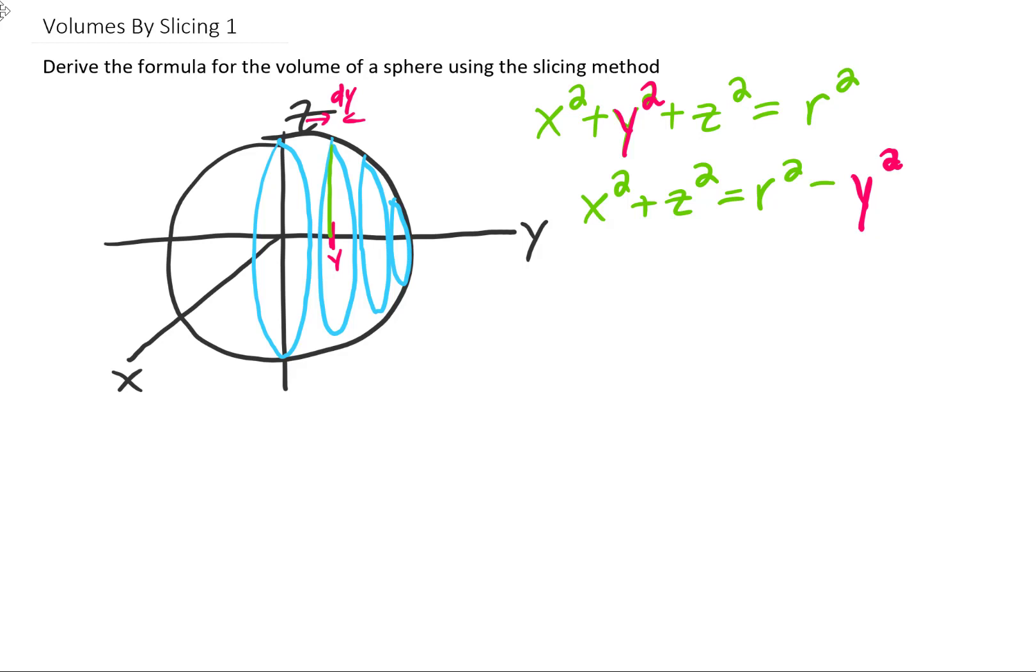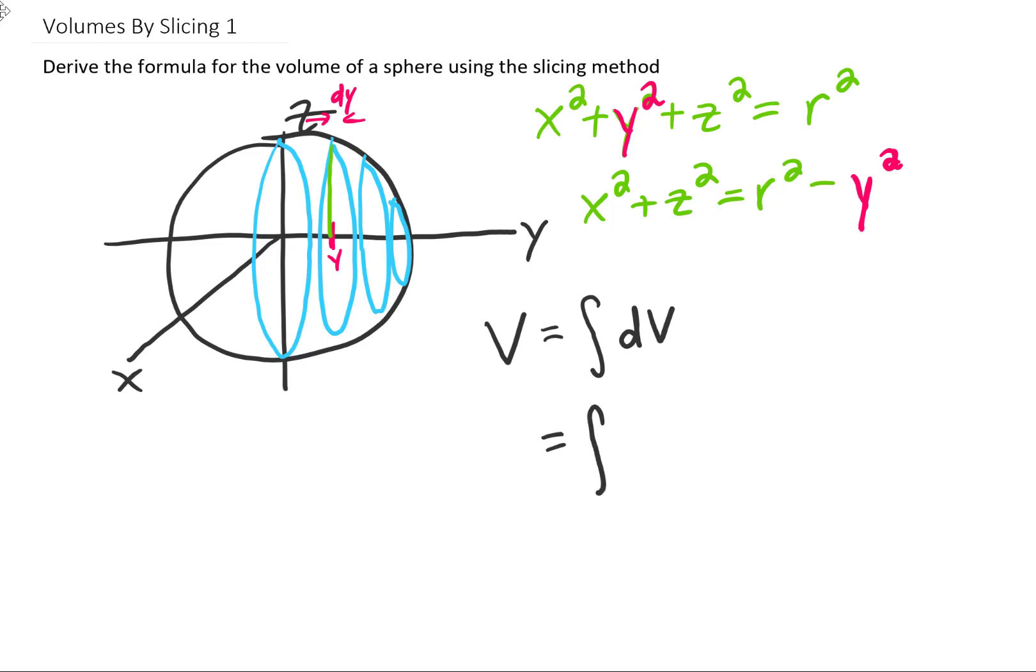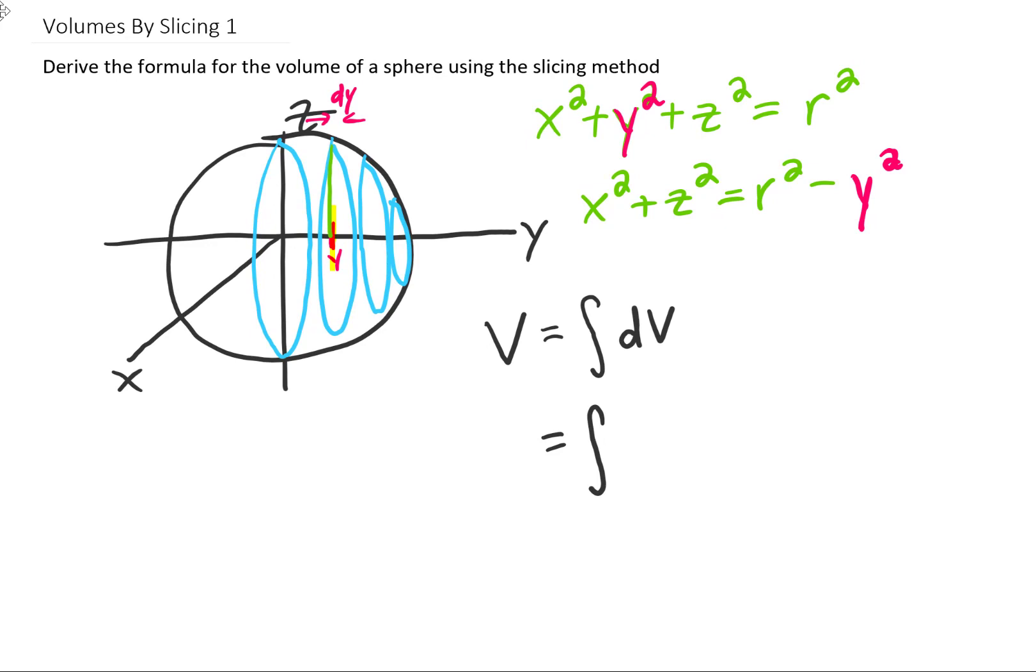Now I think we have all the setup we need to do this problem. Because we know that the volume is going to be the integral or the sum of all of these infinitesimally thin cylinders. And we can say that the volume of each one of those little tiny cylinders is dV. Let's get a little more specific. For any given y value, we get a very specific thin cylinder.